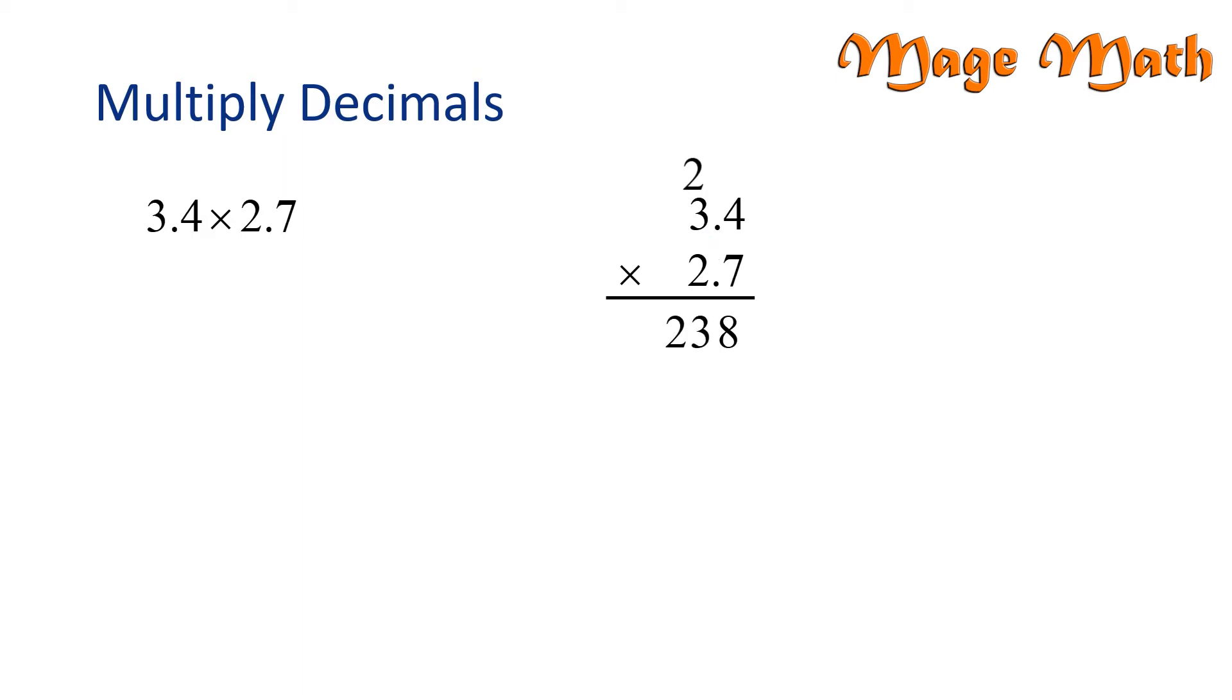We can write both digits down below. We just need to make sure that each digit is in its own place value column. Now, we need to write 0 below the 8 because this is a placeholder and we need it so we can start multiplying by 2 in 2.7. Also, we need to cross out the 2 above that we had previously carried. And now we're ready to start multiplication again.